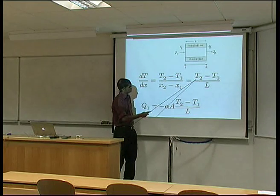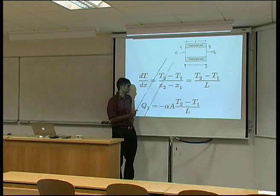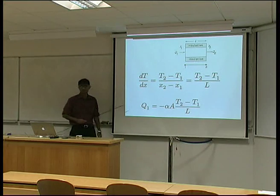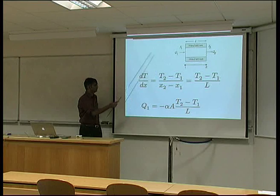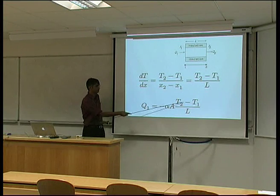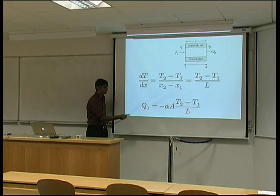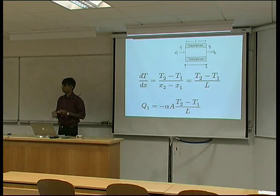And if L is the length of our bar, then that's simply T2 minus T1 over L, and therefore we have an equation for Q1 in terms of T2, T1, and the length of the bar, and the thermal properties of the bar.